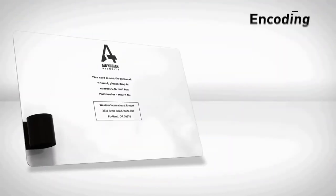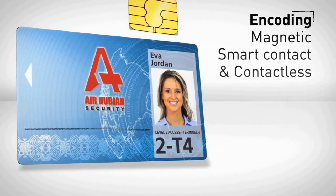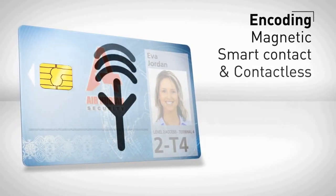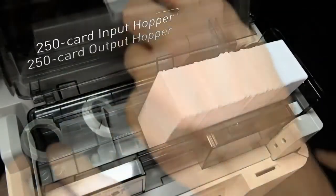To meet your specific needs, Avancia offers a full range of encoding options, which can be combined in a same printer. Magnetic stripes, as well as smart contact and contactless.